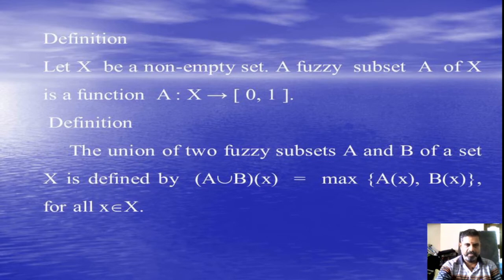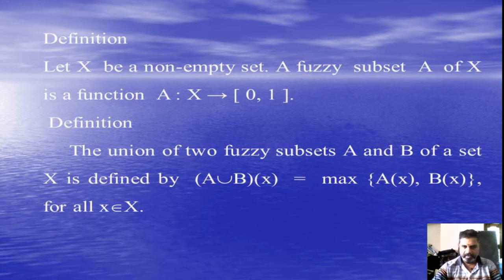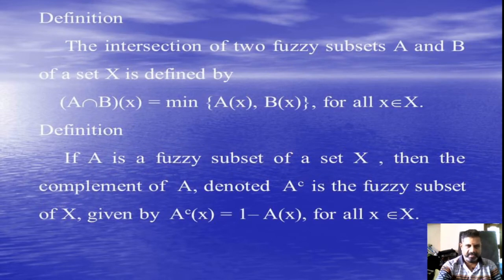Definition. Let X be a non-empty set. A Fuzzy Set capital A of X is a function capital A from X to [0,1]. The union of two Fuzzy Sets A and B of a set X is defined by A union B of x equal to max{A(x), B(x)} for all x in X. Similarly, the intersection operation is defined as min{A(x), B(x)}.